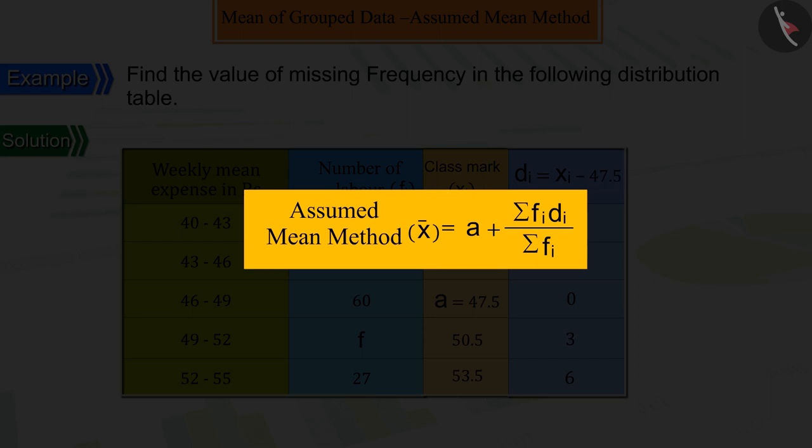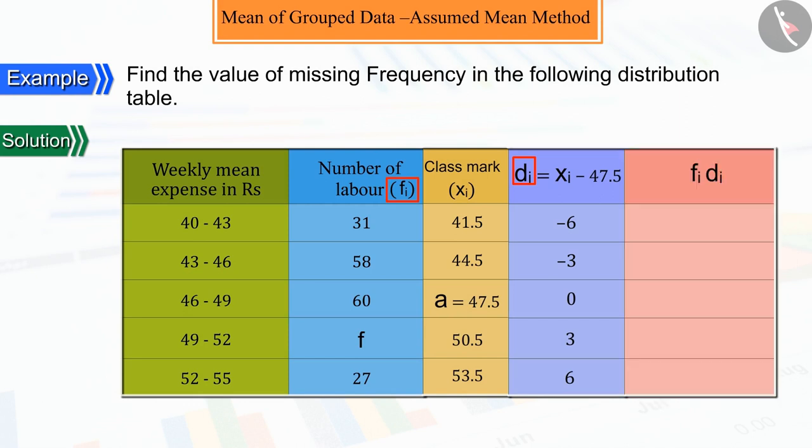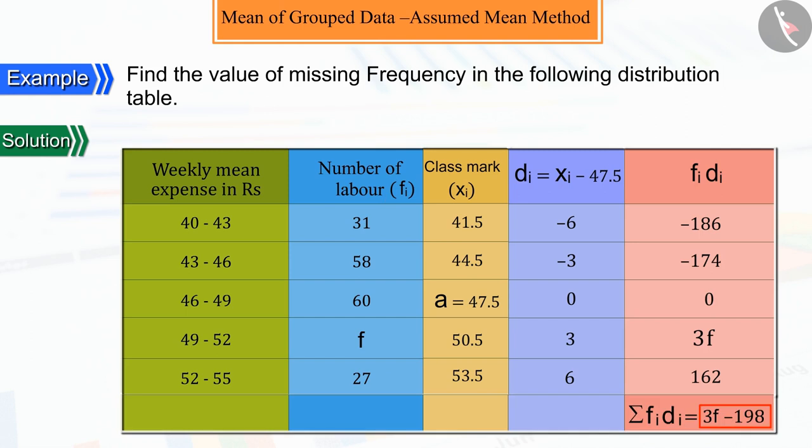From the assumed mean method, we can see here that we need the sum of the products of fi di and the sum of frequencies fi. So we multiply each di by its corresponding frequency fi and get their sum equal to 3f minus 198, while the sum of corresponding frequencies is obtained as 176 plus f.